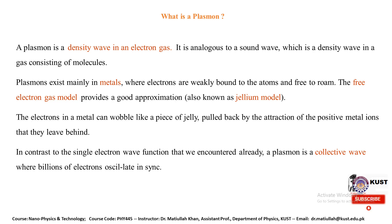The electrons in a metal can wobble like a piece of jelly, pulled back by the attraction of the positive metal ions they leave behind. In contrast to the single electron wave function, a plasmon is a collective wave where billions of electrons oscillate in particular synchronization.